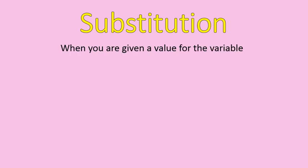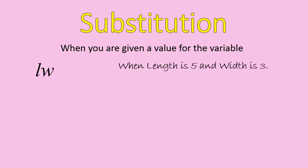Now we're going to talk about substitution — that's how we solve a variable expression. When you're given a value for your variable or variables, you can actually solve them. So if I have LW, that means L times W. You might have seen this before in an equation for area of a rectangle: length times width. I'm giving you that the length is five and the width is three, often written as L equals five and W equals three. You can plug in five for L and three for W, and it becomes five times three, which is fifteen.